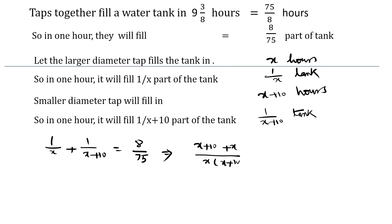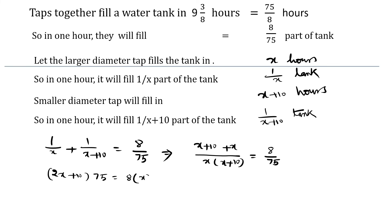Taking LCM, we get x times (x plus 10) in the denominator, and 1 times (x plus 10) plus 1 times x in the numerator, equal to 8 over 75. Now cross multiplying, we get (2x plus 10) times 75 is equal to 8 times x times (x plus 10).